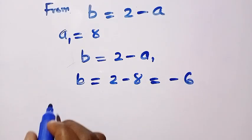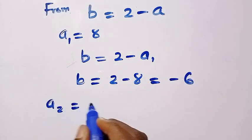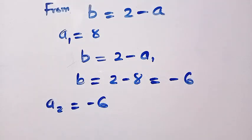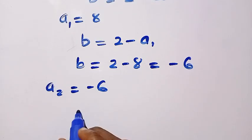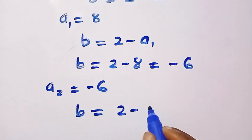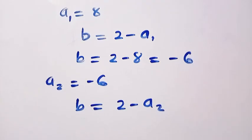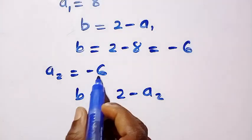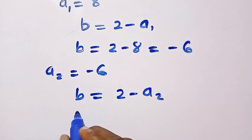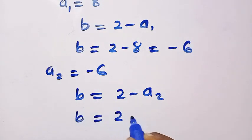And again when our a2 here equals minus 6, we try and replace it as we have b equals 2 minus a2. And 2 minus a2, our a2 is minus 6. By changing it we have b equals 2 minus open bracket minus 6.